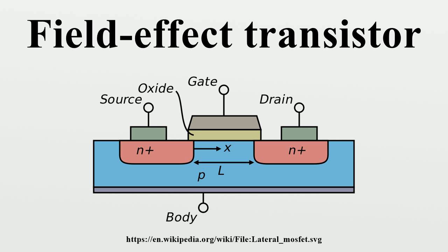If drain to source voltage is increased, this creates a significant asymmetrical change in the shape of the channel due to a gradient of voltage potential from source to drain. The shape of the inversion region becomes pinched off near the drain end of the channel.